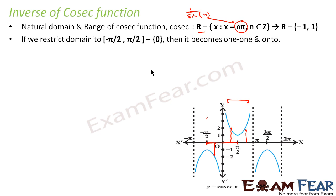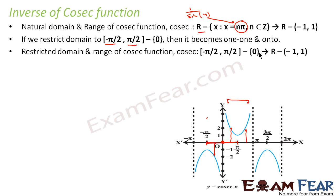Note that zero is not defined for cosec, so the domain is minus π/2 to π/2 minus {0}. With this restriction, cosec becomes one-one and onto. The restricted domain is (−π/2, π/2) \ {0}, and the range is any real number except values between minus one and one.